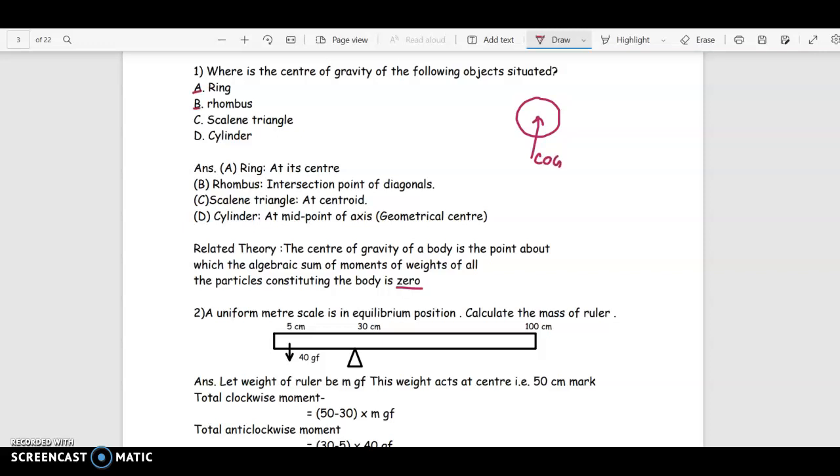For rhombus, it is intersection point of diagonals. For scalene triangle, that is which has unequal sides, it's at centroid. For cylinder at midpoint of axis, that is its geometrical center.